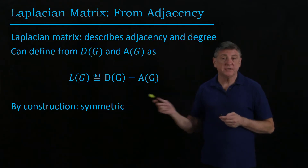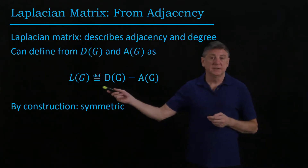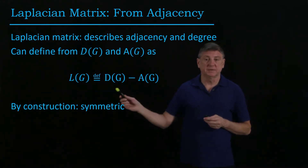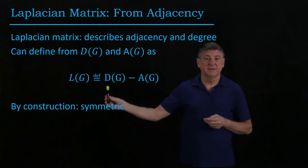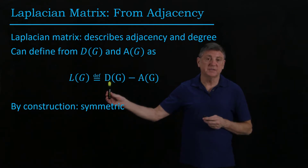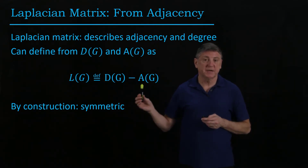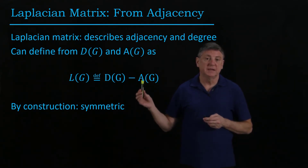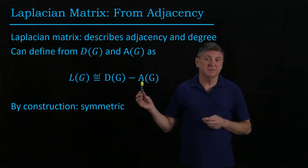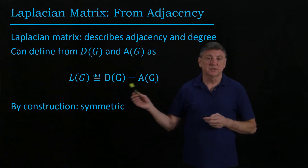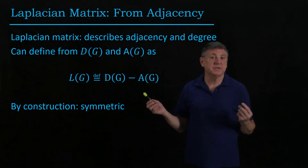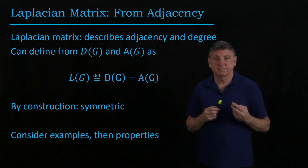The second observation is that by construction the Laplacian is symmetric. The degree matrix is a diagonal matrix, which is symmetric, and the adjacency matrix is also symmetric. So the sum of two symmetric matrices is symmetric.